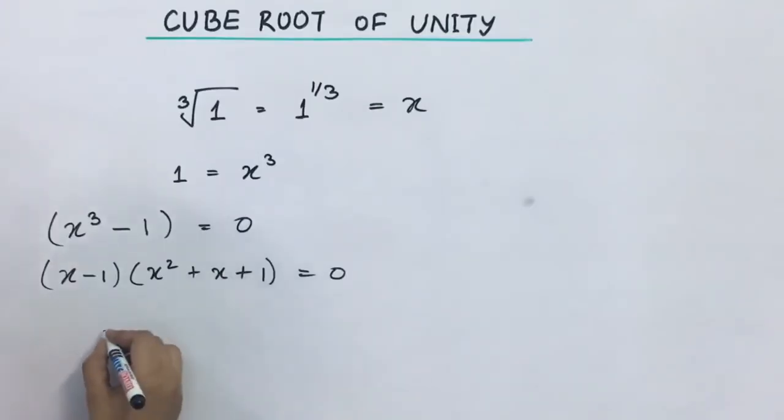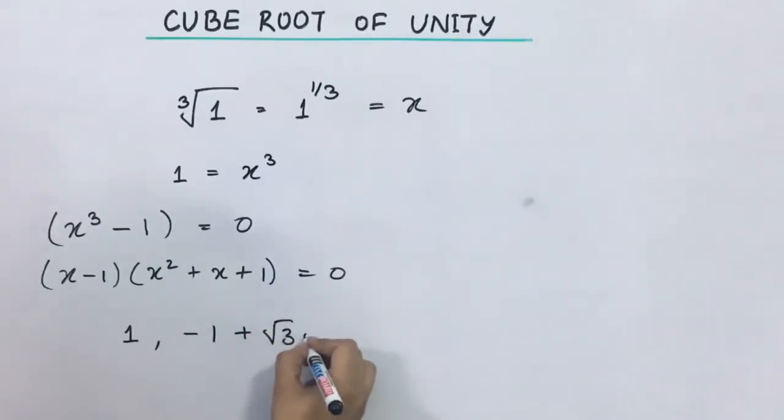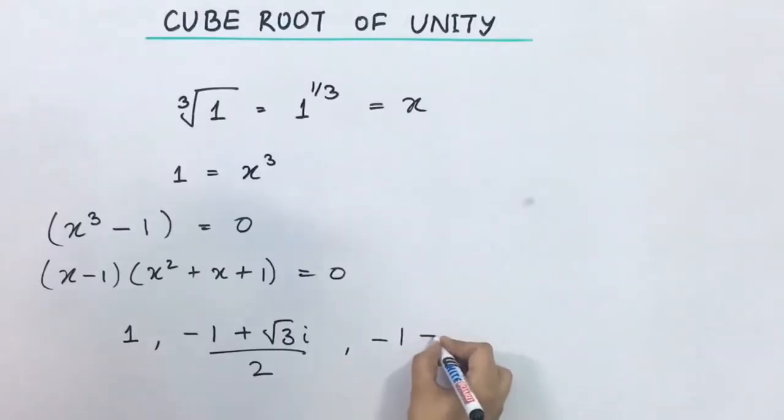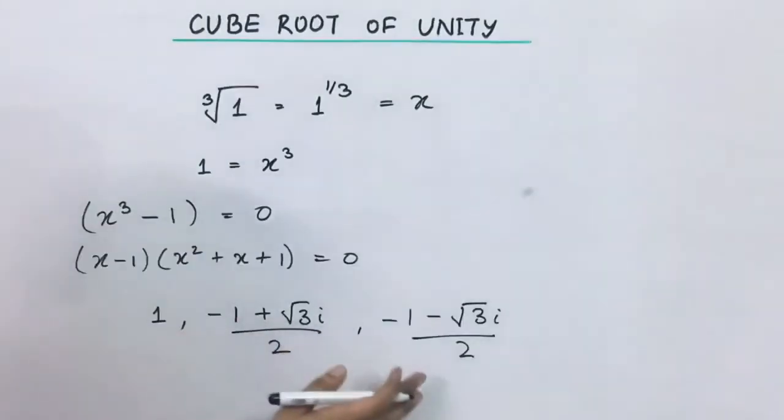From these factors we can find the roots of this equation. Ek root hoga iska x minus 1 se 1 and the other two roots will be minus 1 plus root 3 i upon 2 and minus 1 minus root 3 i upon 2. These will be the roots of x square plus x plus 1 jo ki hum find kar sakte hain by the use of quadratic formula.